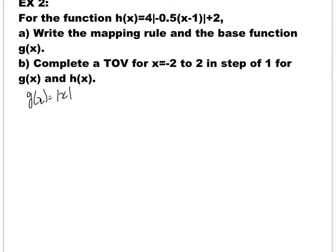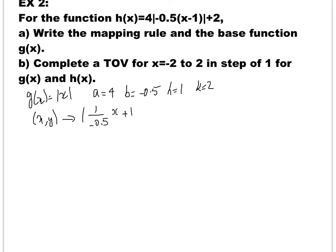For the mapping rule, looking at h of x, we can see that a is 4, b is negative 0.5, h is 1 (because in the formula it's minus h, and here we have minus 1), and k is 2. So the mapping rule is (x, y) goes to (1 over negative 0.5 times x plus 1, 4y plus 2). Simplifying, 1 over negative 0.5 gives negative 2, so the mapping rule is (negative 2x plus 1, 4y plus 2).